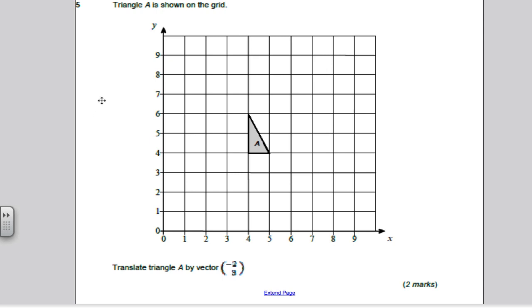Here's the triangle drawn on the grid. Translate the vector by minus 2, 3. Translate means move. The top number is always the X number and the bottom number is the Y. X says how far right or left, Y says how far up or down. Minus 2, 3 means 2 left, 3 up.